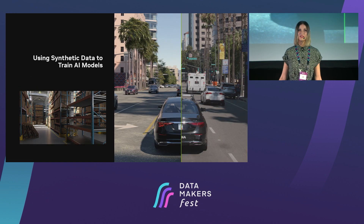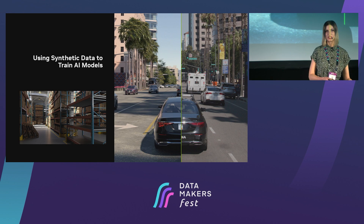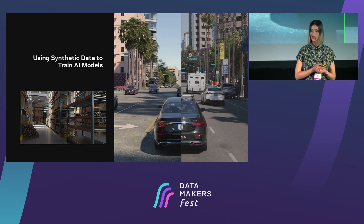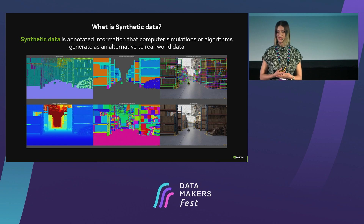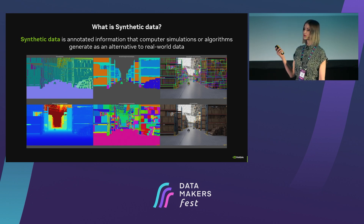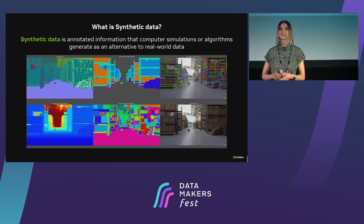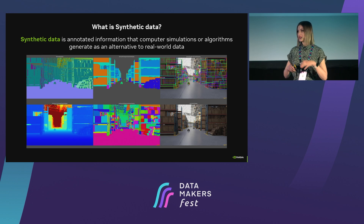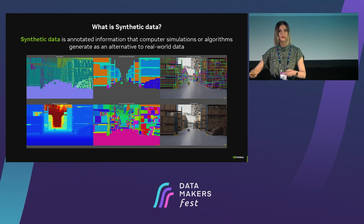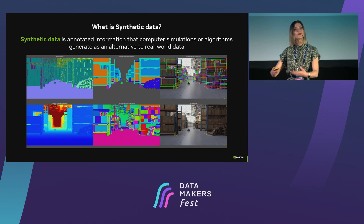I believe we can rely on synthetic data to solve these challenges and bridge the gaps of real data. But first, what is actually synthetic data? Synthetic data is annotated information that computer simulations or algorithms generate as an alternative to real-world data. In short, it's fake data — it doesn't come from the real world, it comes from some virtual simulation. You start with something like a digital twin of your object or the whole environment, then you generate a render of this virtual object together with some annotations, and then you use it to train your neural networks.